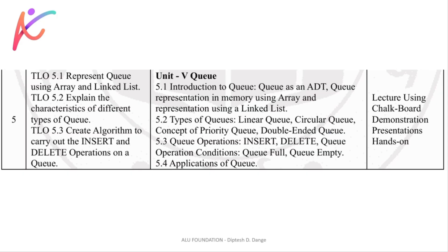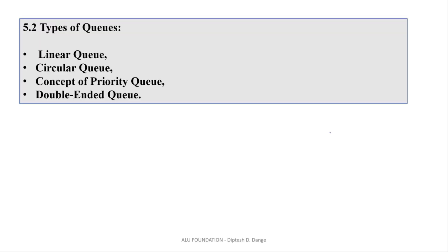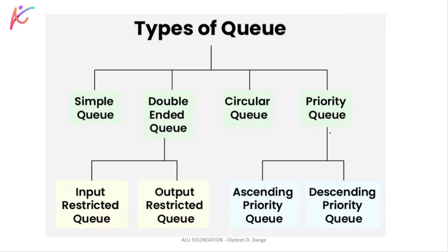Let's get started with the types of Queue. There are 4 types basically. First one is simple Queue — simple Queue को हम कहते हैं linear Queue. उसके बाद है circular Queue, उसके बाद है priority Queue, उसके बाद है double ended Queue. Double ended Queue is divided into two parts: input restricted Queue and output restricted Queue.